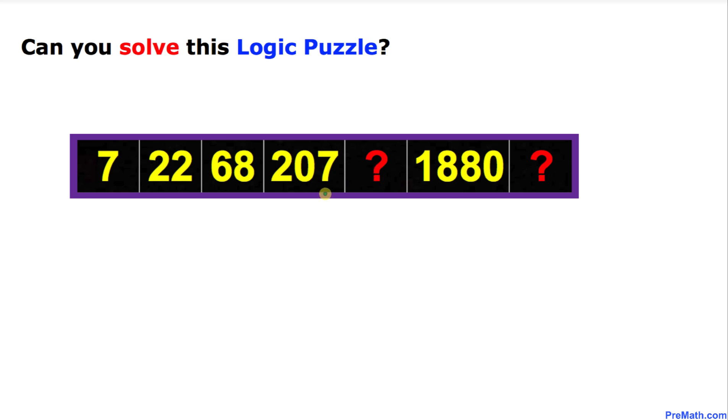In this number series problem, we got these numbers: 7, 22, 68, 207, and 1880. Now the question is, what number is going to be at these two places? At this place and at this place as well.